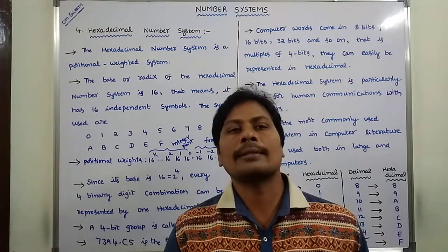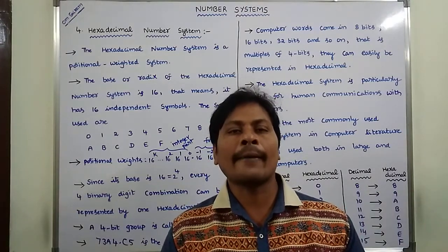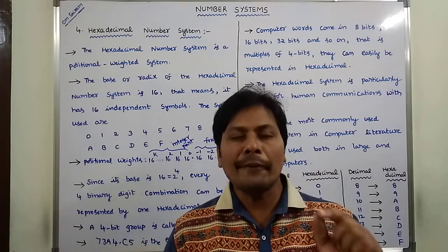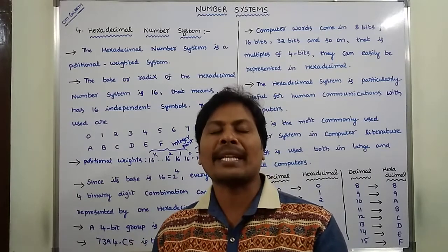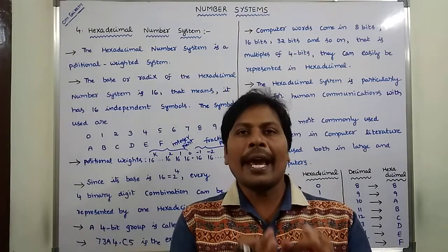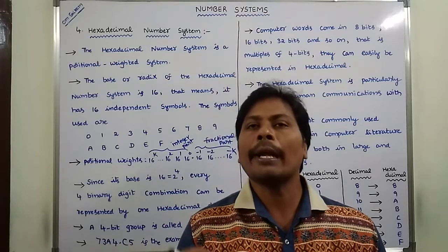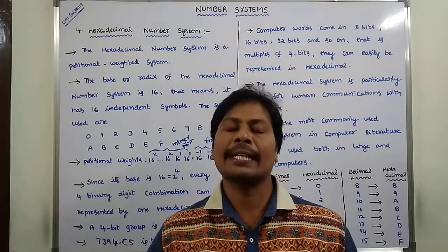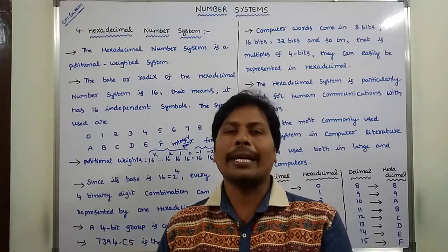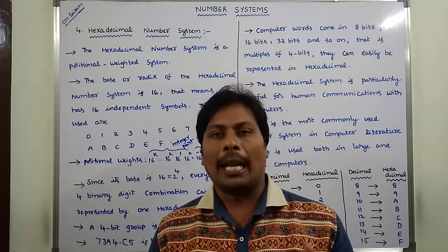Hexadecimal number system has the base or radix of 16. Since its base or radix is equal to 16, and 16 can be written as 2 power 4, every 4-bit binary group can be represented as one hexadecimal digit. Every hexadecimal digit can be represented by using a 4-bit binary group, and every 4-bit binary group is called a nibble.